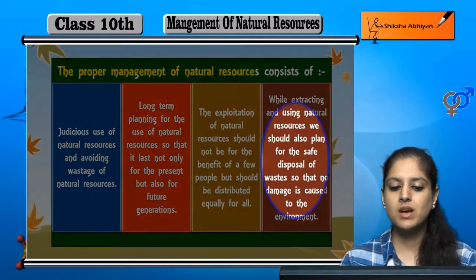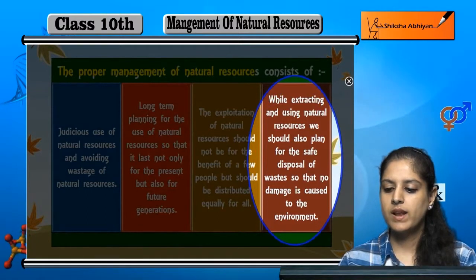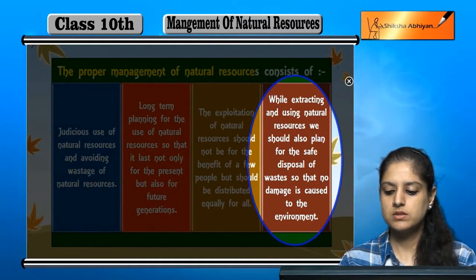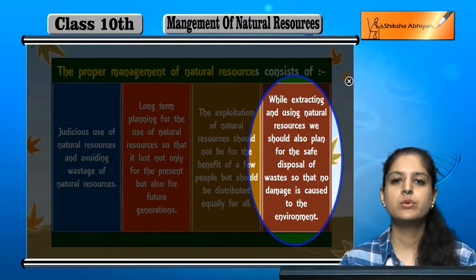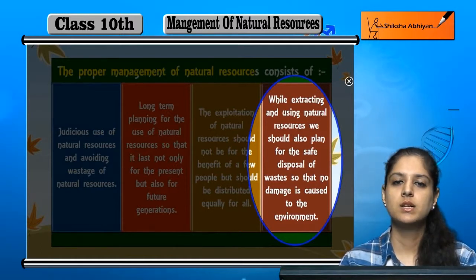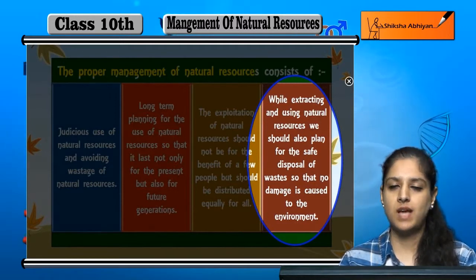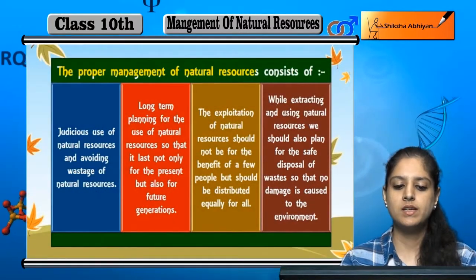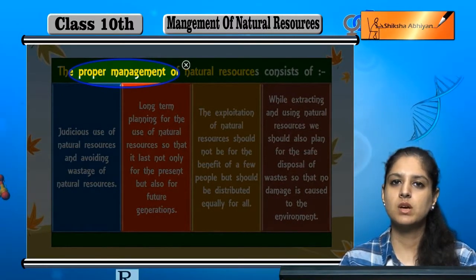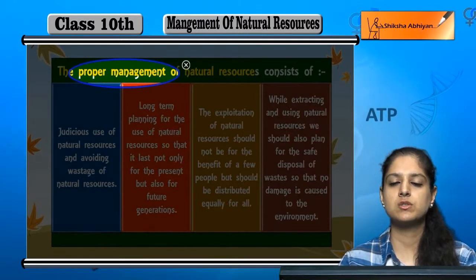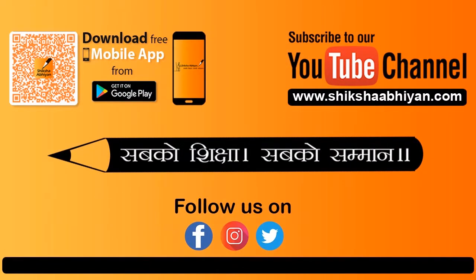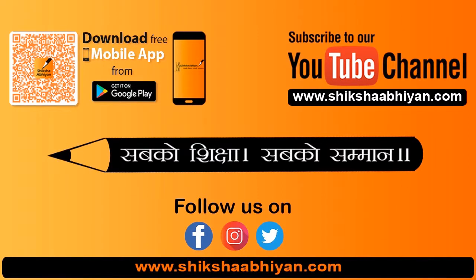The last thing is that while extracting and using natural resources, we should also plan for the safe disposal of waste so that no damage is caused to the environment. The environment should not be polluted. So these are all things we should keep in mind: proper management of resources so that both present and future generations can benefit from them.